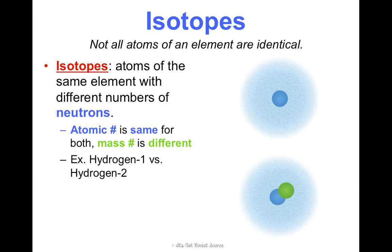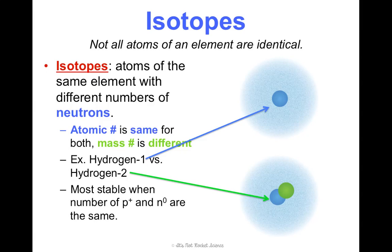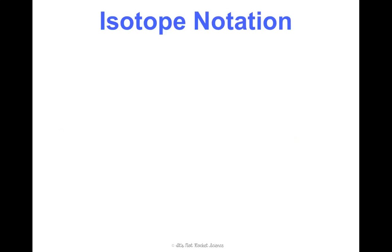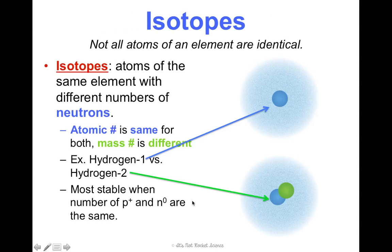But, because the number of neutrons is different, the mass number is going to be different. So, for example, hydrogen one versus hydrogen two. These are pictures of it. Hydrogen one has one proton in the nucleus, and it has zero neutrons. So, one plus zero means the mass number is one. In this picture, we see hydrogen two. Hydrogen two has one proton, just like hydrogen one, but it also has one neutron in the nucleus. And one plus one makes the mass number two. Now, when comparing isotopes, note that they are most stable when the number of protons and neutrons are the same. So that means this atom would be more stable than this one because they have the same number of protons and neutrons.